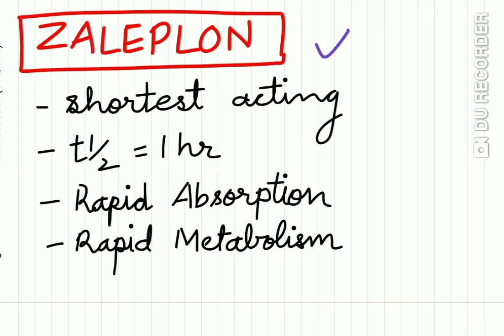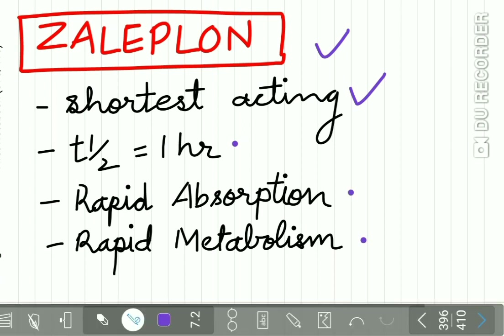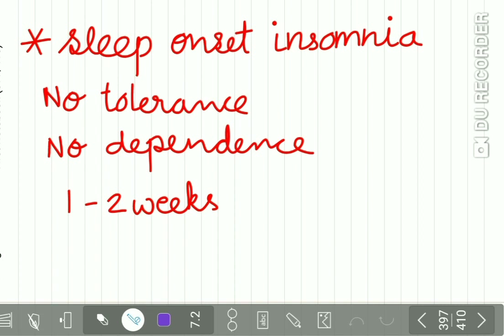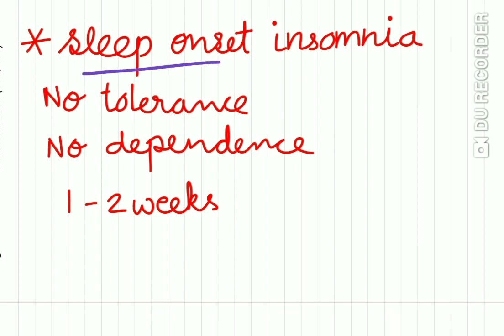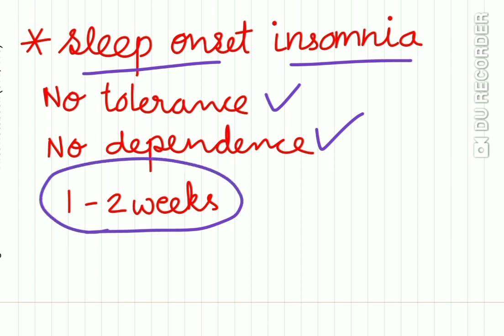Zaleplon is the shortest-acting non-benzodiazepine drug with a half-life of 1 hour. There is rapid absorption and rapid metabolism. It can be used for treatment of sleep-onset insomnia, where the onset of sleep is a problem for the patient. There is no tolerance and no dependence, and it can be used over a period of 1 to 2 weeks.